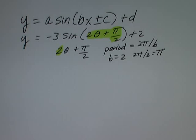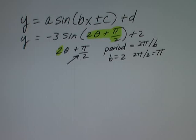Now we want to determine where this function is going to start. Generally, we start the parent sine function at theta = 0. Our first inclination might be to look at that π/2 and say we're going to shift the function to the left — keeping in mind that for a horizontal shift it's always opposite in sign. This is positive, so we'd shift left. The inclination may be to say we're shifting left by π/2, but that's not correct.